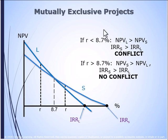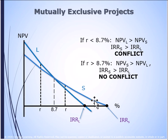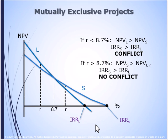If we look at mutually exclusive projects, we find that there are conflicts when looking at projects L and S. There is a range where L has a higher net present value than S, and then a range where S is greater than L. Looking at the internal rate of return, S is higher than L. So if you only look at internal rate of return, S would always be better than L. However, if you look at net present value, depending on the discount rate, L might at some point be better than S, and other times vice versa.